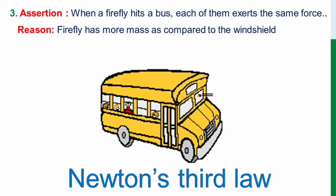We know that according to Newton's third law, when there is an action, there will be a reaction. So when the firefly is hitting a bus, each of them will exert a same force. The force exerted by firefly to the bus and the force exerted by the bus to the firefly will be same. But will the acceleration of these two objects be same?